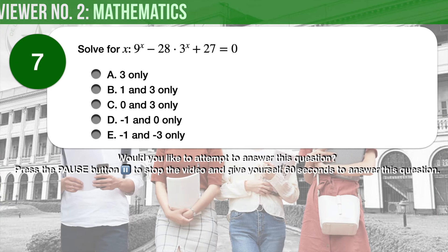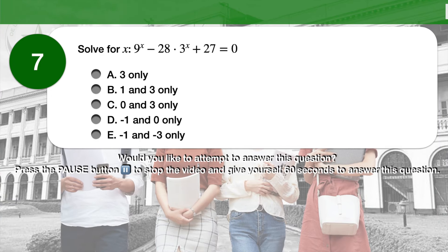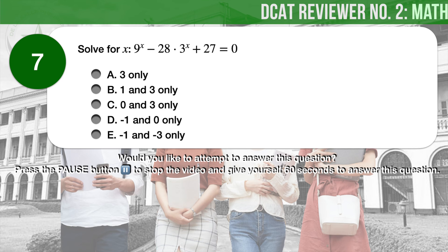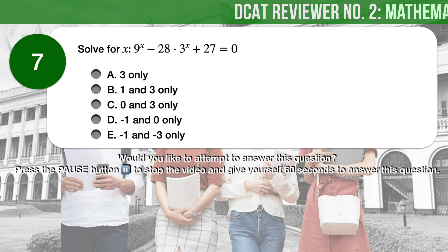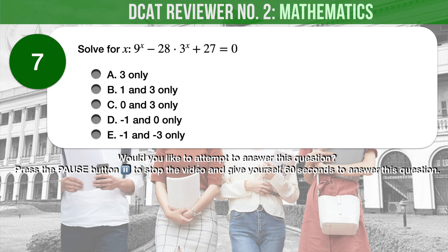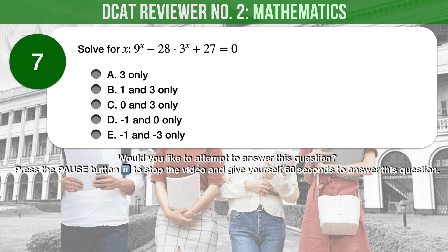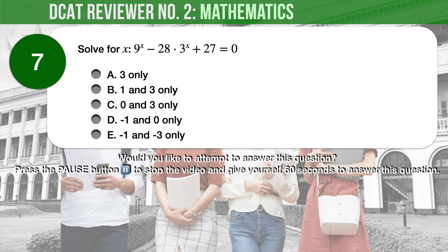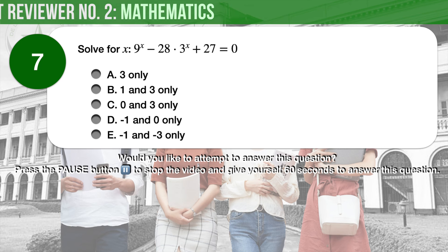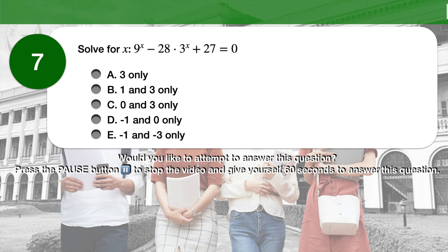Question number 7. Solve for x in the equation: 9 raised to x, minus 28 times 3 raised to x, plus 27, equals 0. A. 3. B. 1 and 3. C. 0 and 3. D. Negative 1 and 0. E. Negative 1 and negative 3.